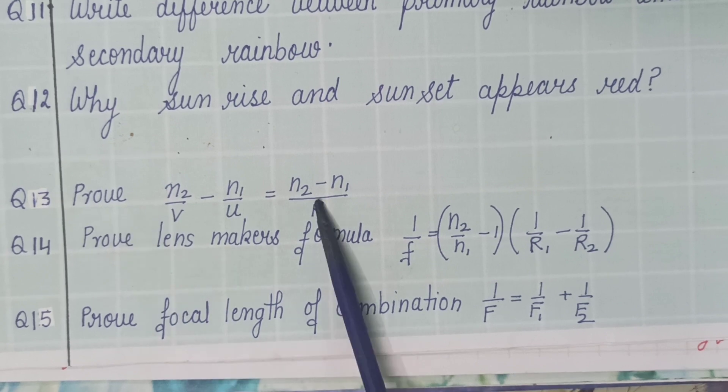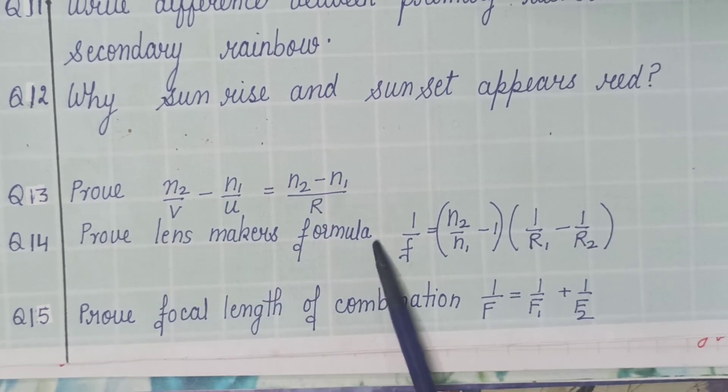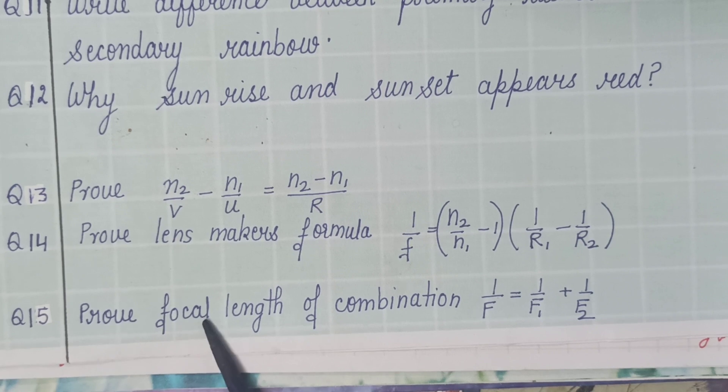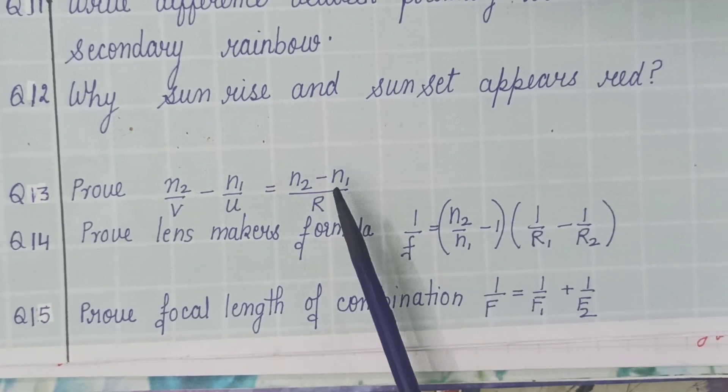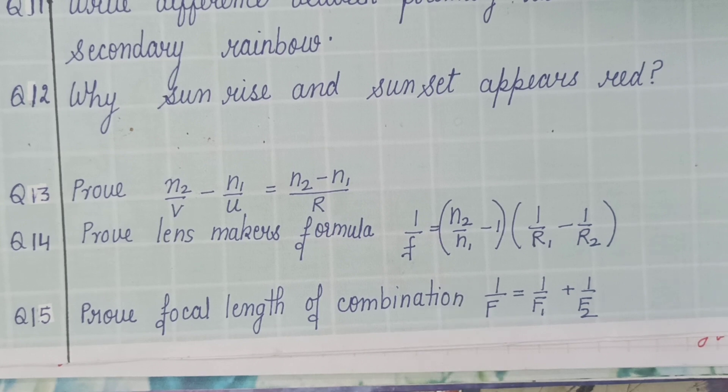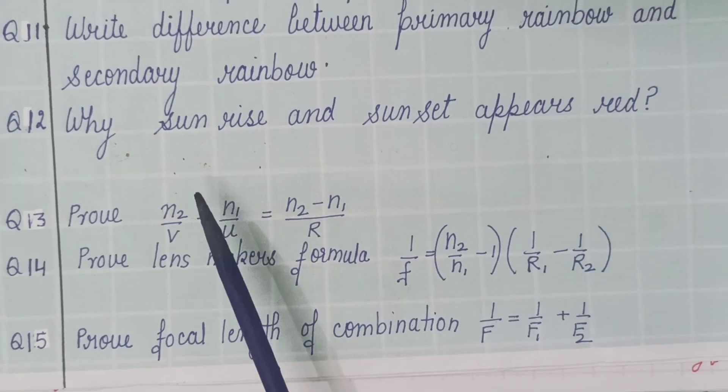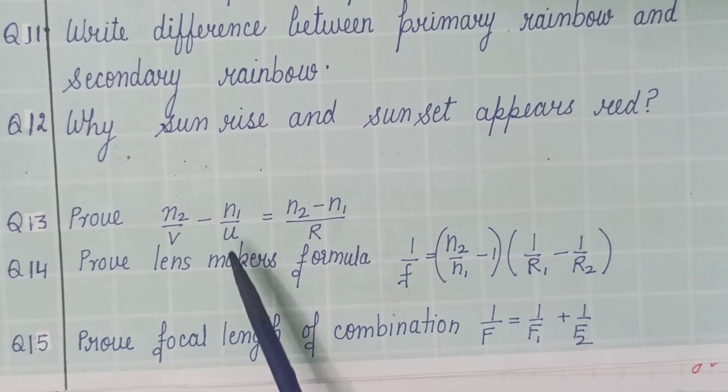This derivation, lens makers formula and proof that focal length of combination of two lenses is given by this. These three derivations are very important. But according to me, these two are very probable question this year.